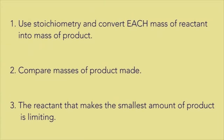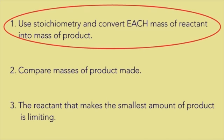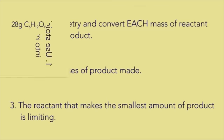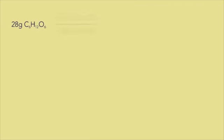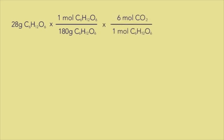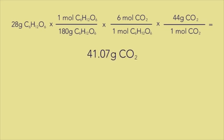Here are three easy steps to complete this type of problem. Let's start with step one. Use stoichiometry and convert each mass of reactant into mass of product. Starting with grams of glucose, convert to moles of glucose using the formula mass. For every one mole of glucose, six moles of carbon dioxide will be made. Multiply by the molar ratio of six over one. This gives us moles of carbon dioxide. Convert that to grams using the formula mass for CO2. Cool.